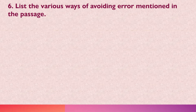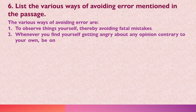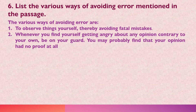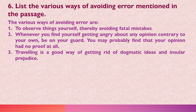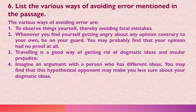List the various ways of avoiding error mentioned in the passage. First, observe things yourself, thereby avoiding fatal mistakes. When you find yourself getting angry about any opinion different to your own, be careful — you may find that you have no proof for your opinion at all. Traveling is a good way to get rid of your fixed ideas and prejudice. Imagine an argument with a person who has different ideas — this imaginary opponent may make you less sure about your fixed or dogmatic ideas.